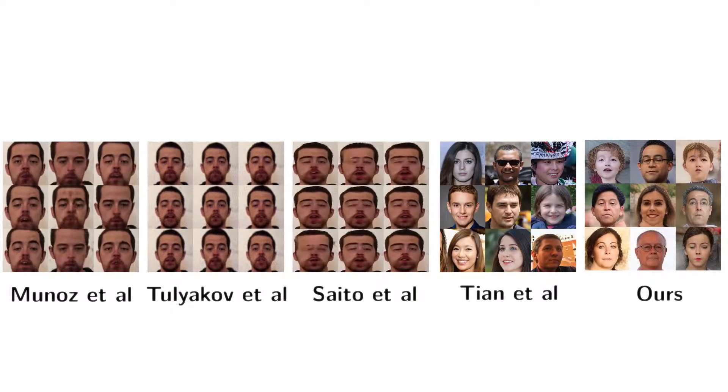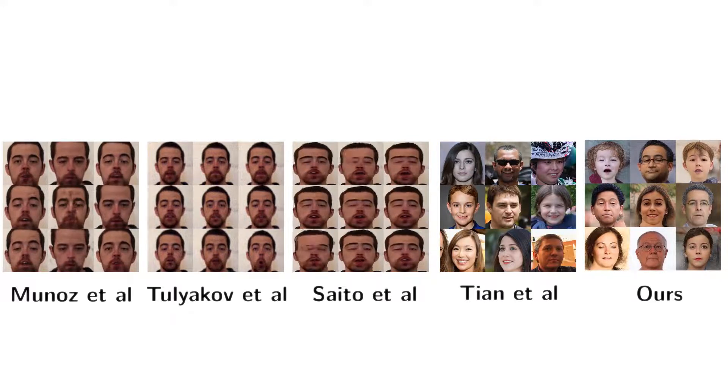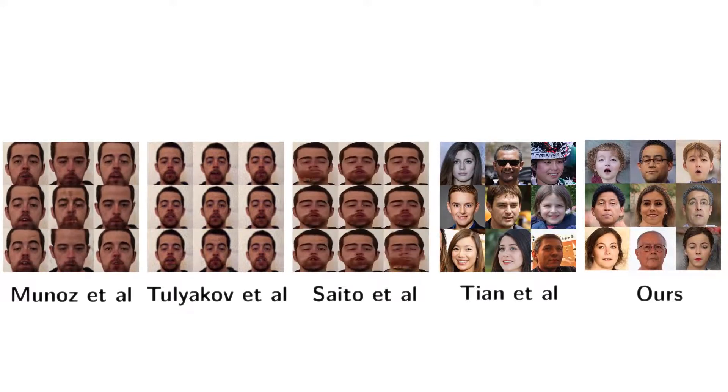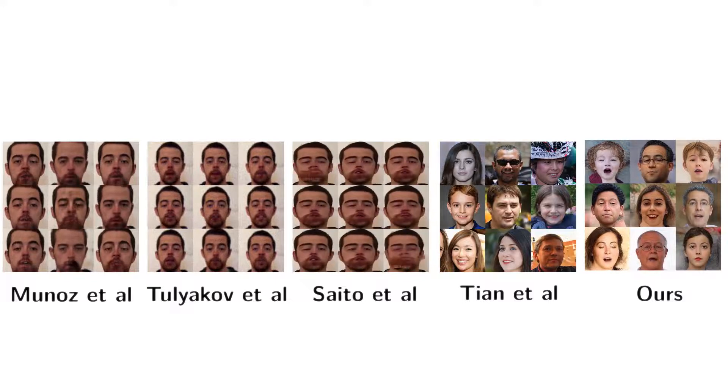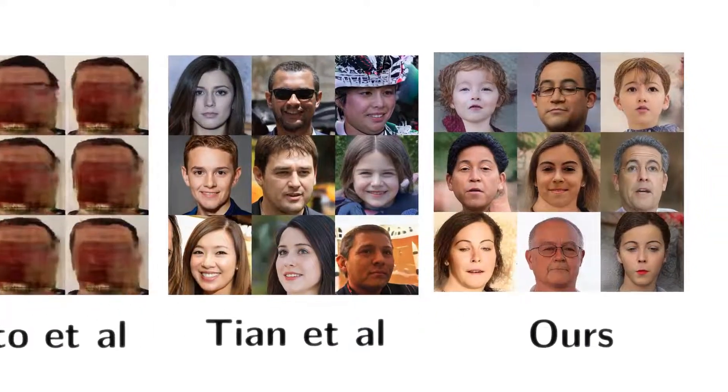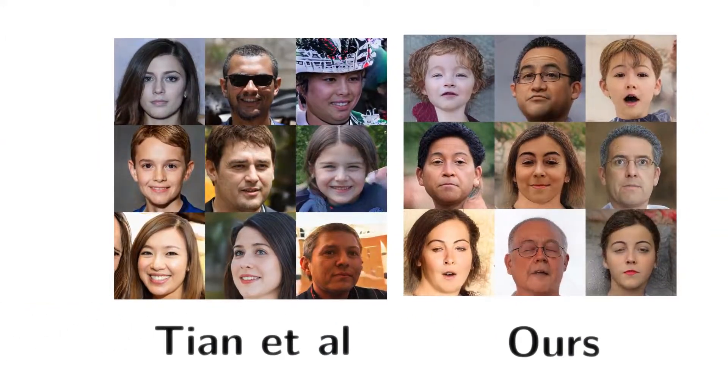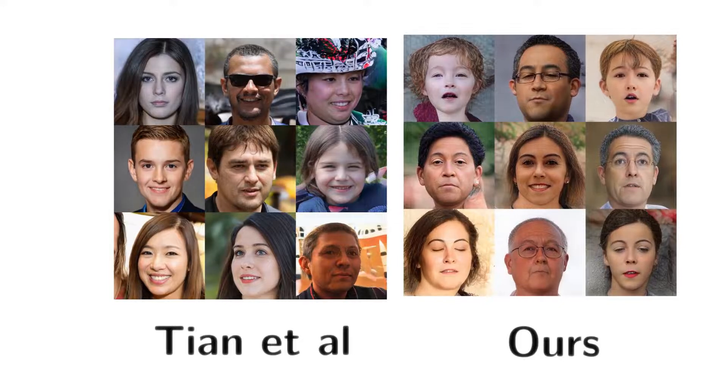While Tian et al. are able to match our work in these respects, their training process includes the StyleGAN network, which makes it significantly more costly than ours. Also, the samples they generate lack the articulated poses and expressions that our method managed to learn from the training video.